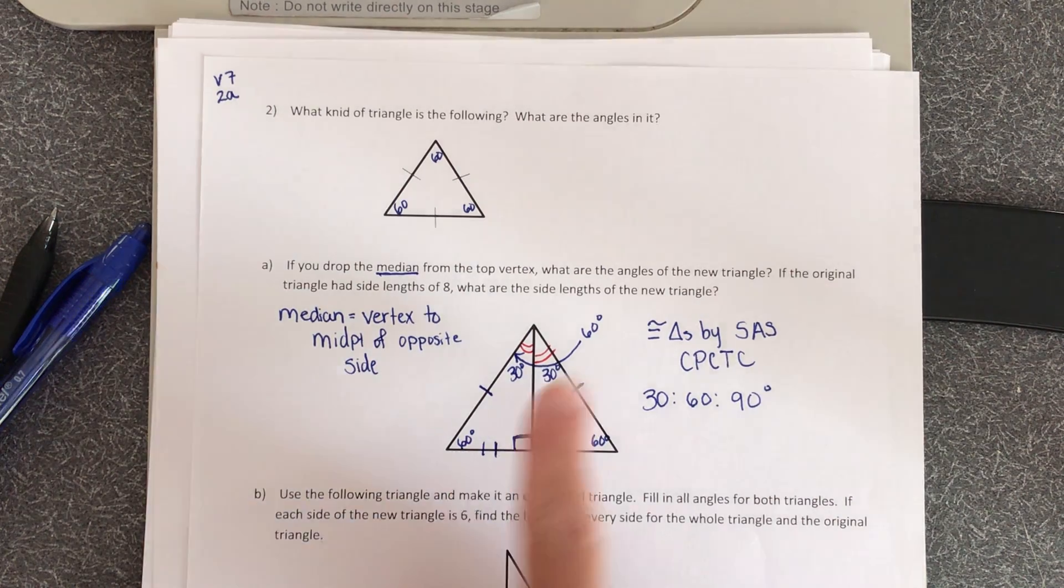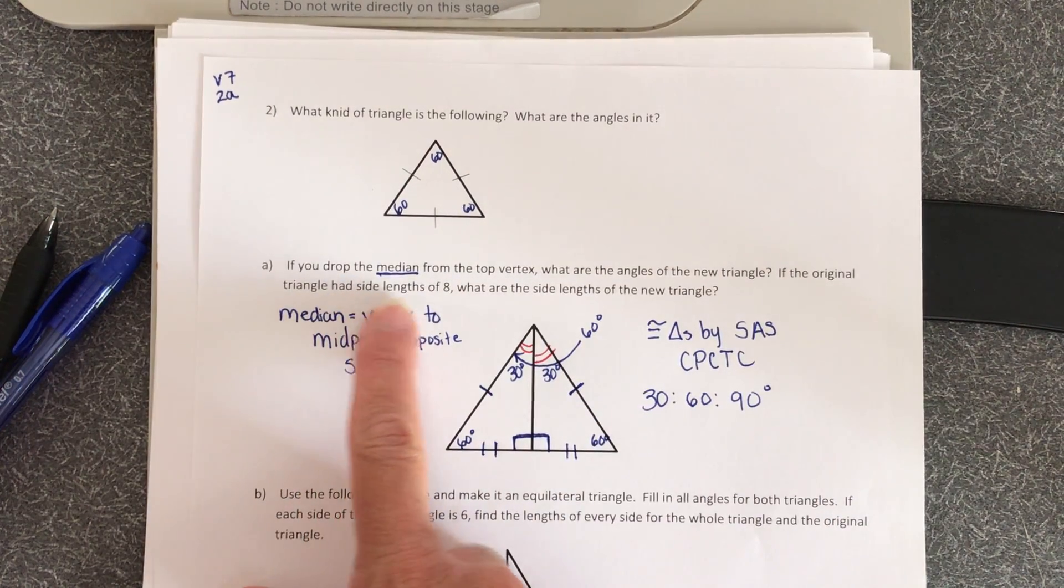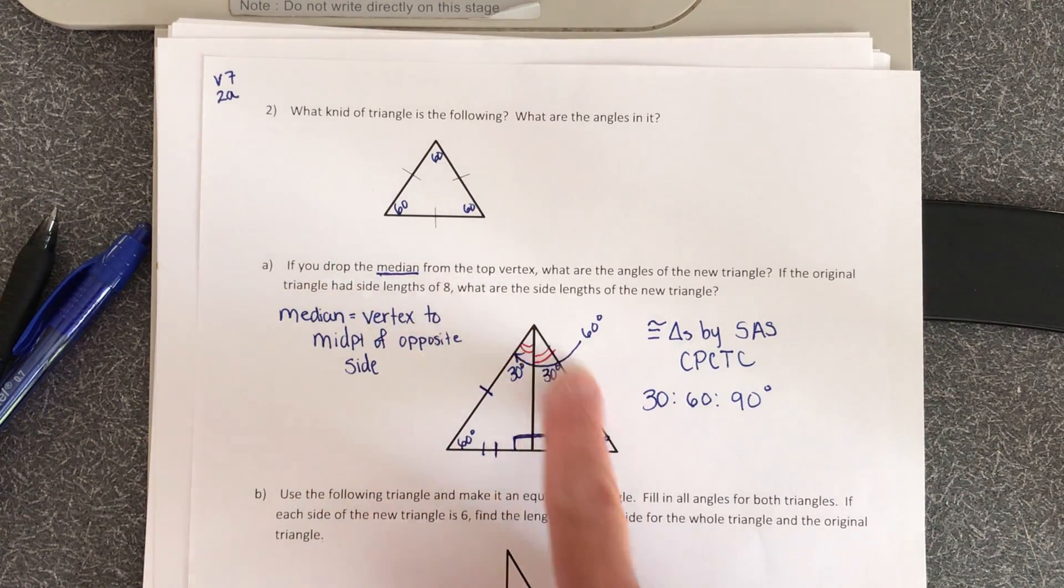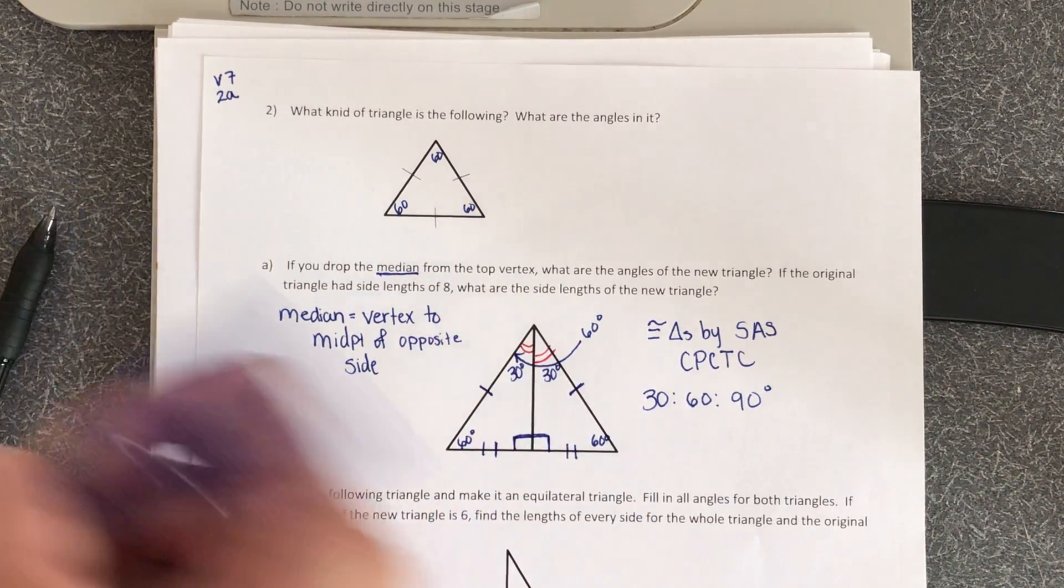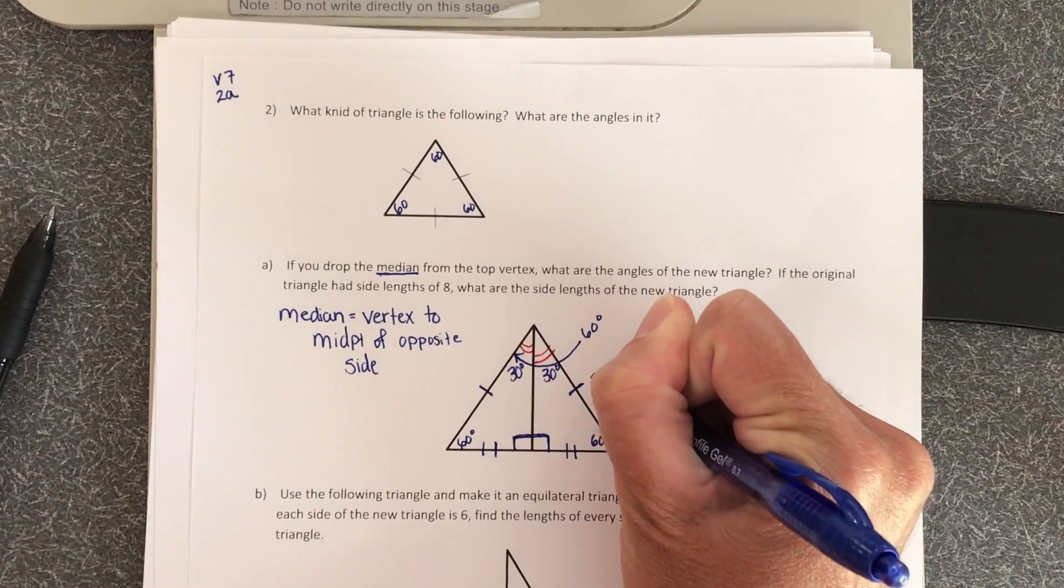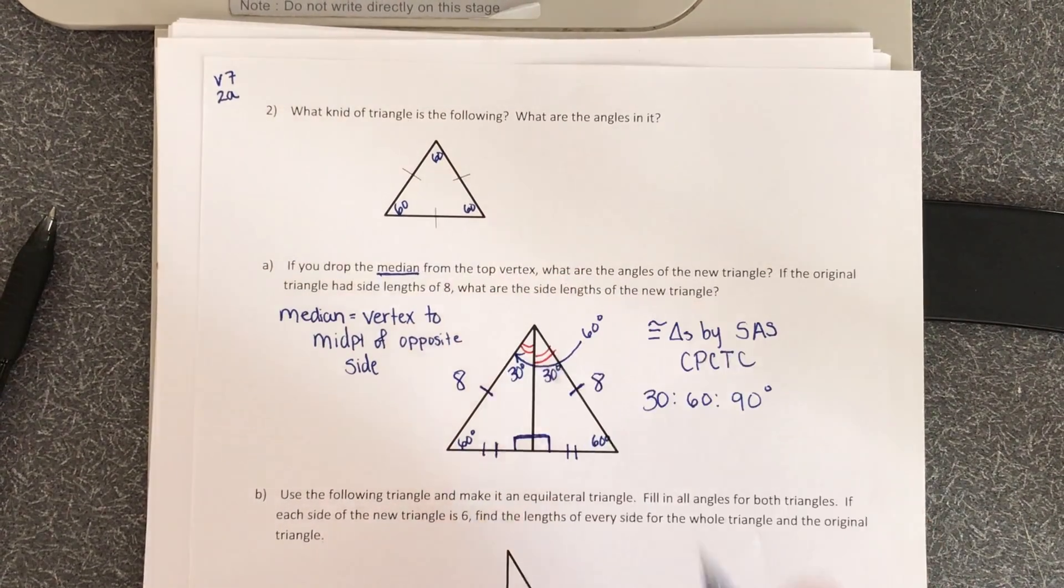So in this information, it says if the original triangle had a side length of eight, so all of the side lengths of this triangle are eight units long. I know that is eight, and this segment right here has to be eight.